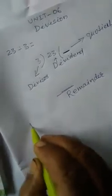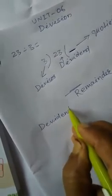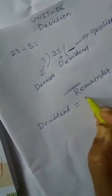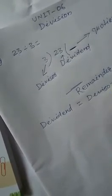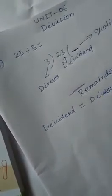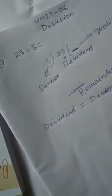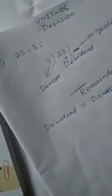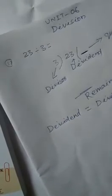Now we make a formula from these terms. The formula is: Dividend = Divisor × Quotient + Remainder.